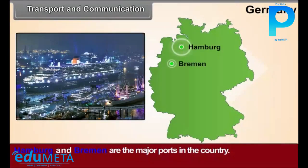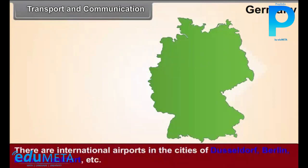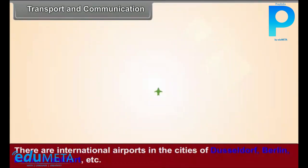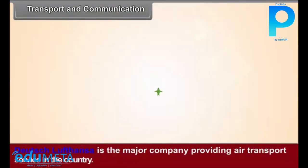Hamburg and Bremen are the major ports in the country. There are international airports in the cities of Düsseldorf, Berlin, Bonn, Frankfurt, etc. Deutsche Lufthansa is the major company providing air transport service in the country.